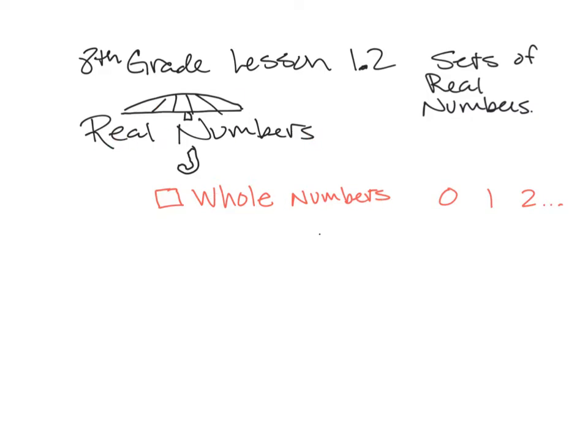Under the umbrella of real numbers are whole numbers. These are numbers you've been dealing with since like the first grade: zero, one, two, nothing in between like half or point five or whatever, just the zero, one, two, three, four, the whole numbers. So anytime you see a positive number that doesn't have a decimal or fraction attached to it, you can give it a title of whole number. Also a real number because it's under that umbrella.